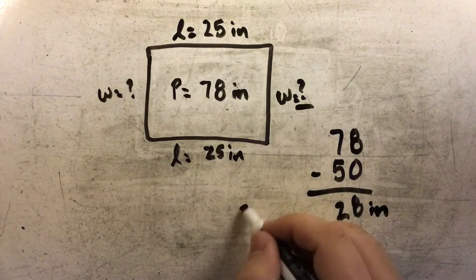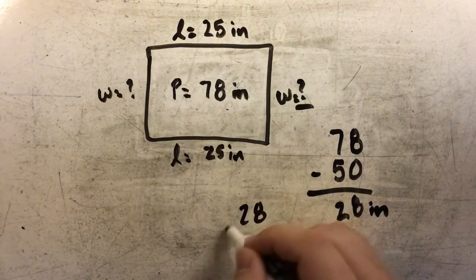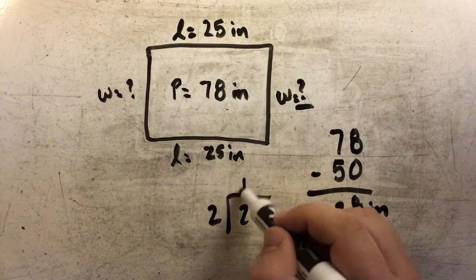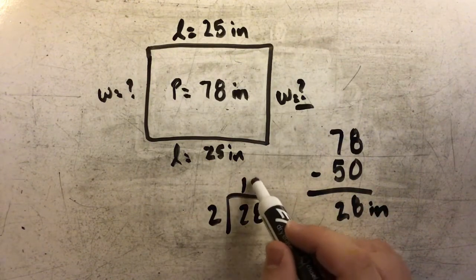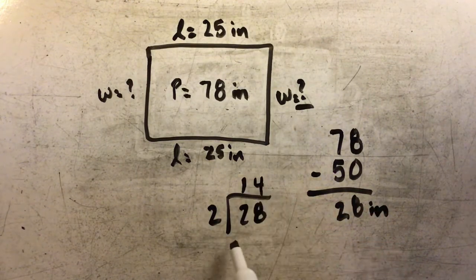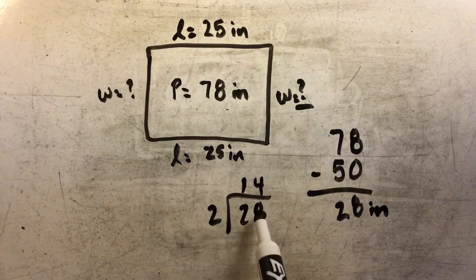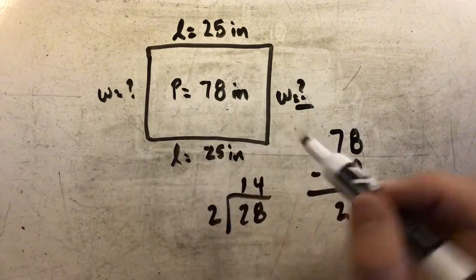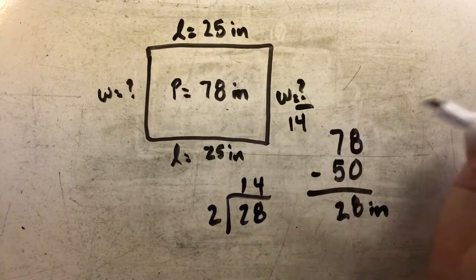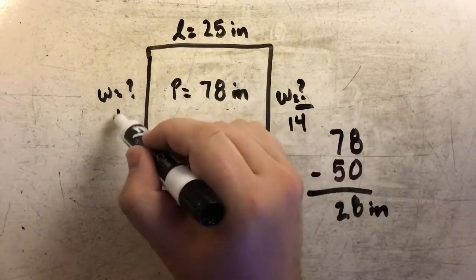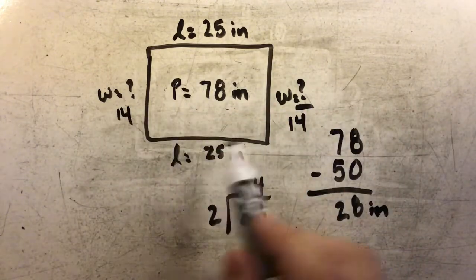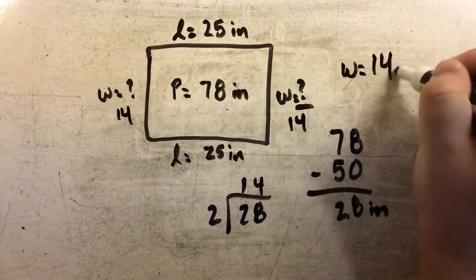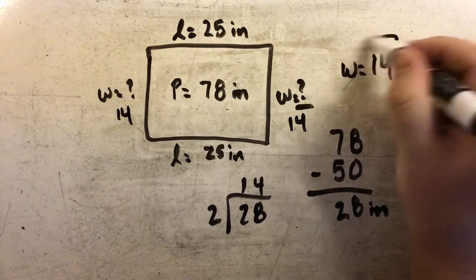So I take 28 and divide it in half by 2. 2 goes into 2 one time. 2 goes into 8 four times. So one of my side lengths would have to be 14, which means that this other side length would also be 14. So my width is equal to 14 inches.